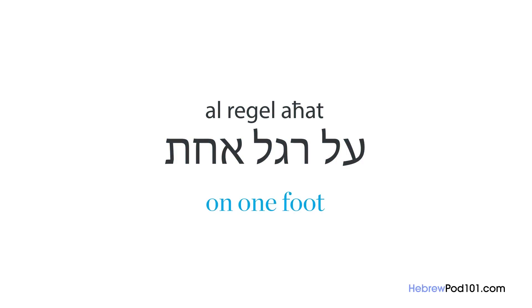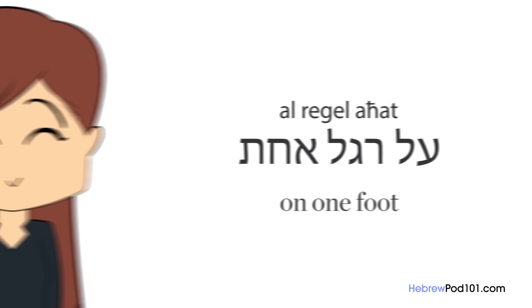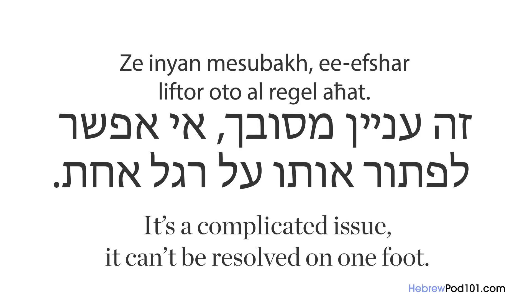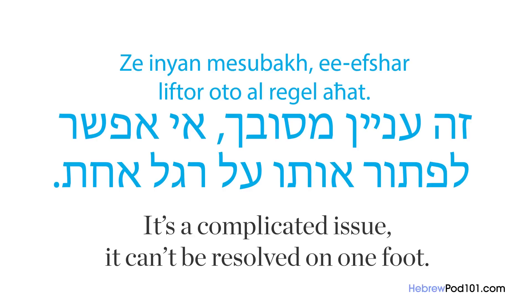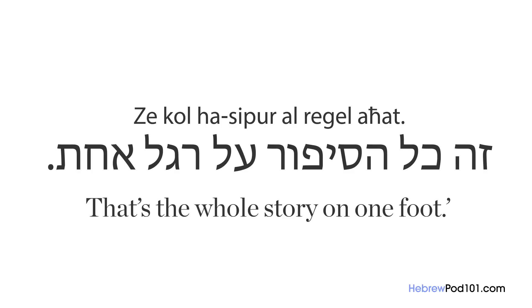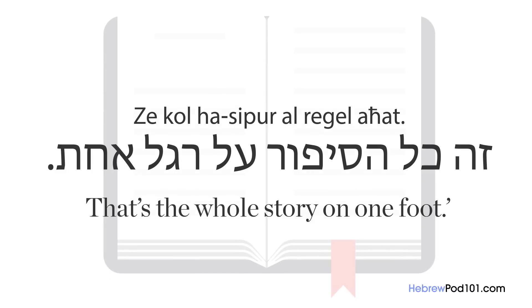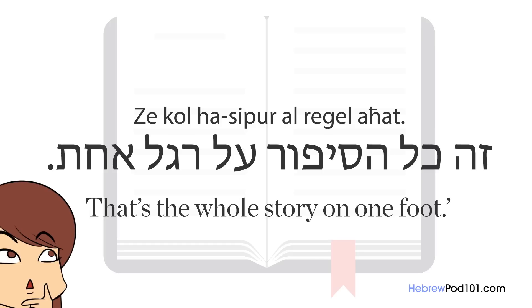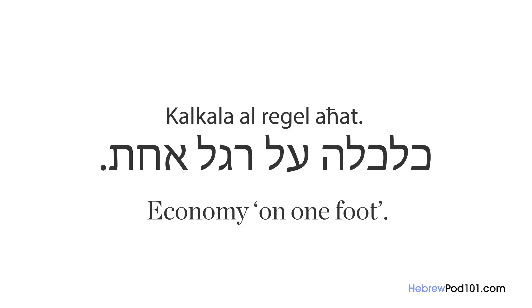Today you can use 'al-regel achat' to imply that something is done briefly without much thought. For example: 'it's a complicated issue, it cannot be resolved on one foot,' or 'that's the whole story on one foot.' You can also find this expression in introductory articles and books, like 'Kalkala al-regel achat' — economy on one foot. How was this lesson? Pretty interesting, right? Leave them in the comments below and I'll try to answer them. Later on!